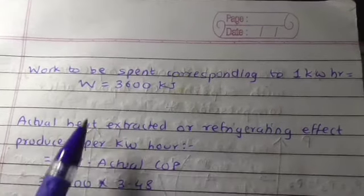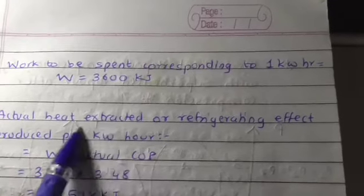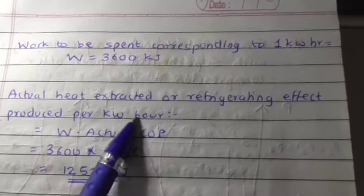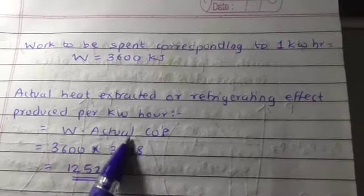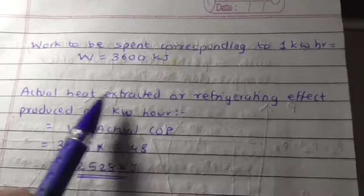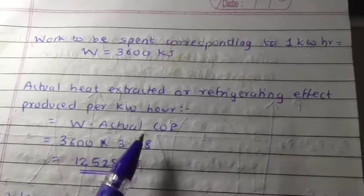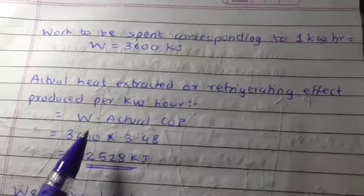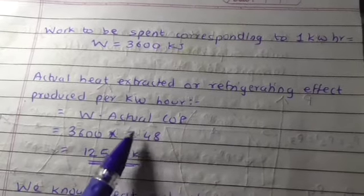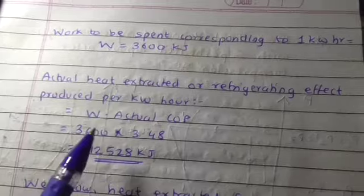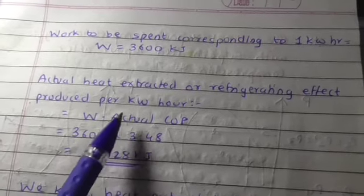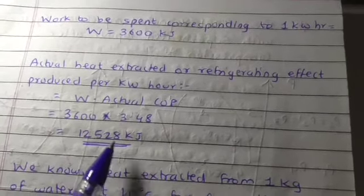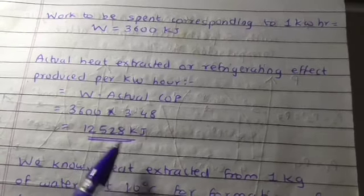Actual heat extracted, that is the refrigeration effect produced per kilowatt hour we have to calculate. We know the formula of COP: COP equals refrigeration effect divided by work done. So refrigeration effect equals work done times actual COP, which is 3600 multiplied by actual COP. We get the value as 12,528 kilojoules.